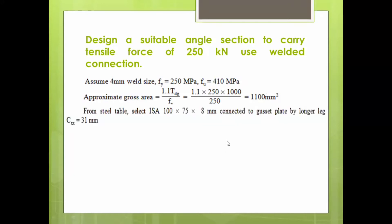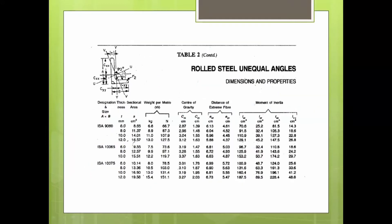Let me show the screenshot of the steel table. I have selected unequal angles — equal angles can also be used. Going with unequal angles, the area column shows that 100×75×8 is the angle section with area 13.36 cm², which converts to 1336 mm². So I am going to select 100×75×8.